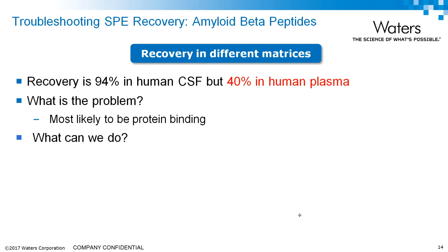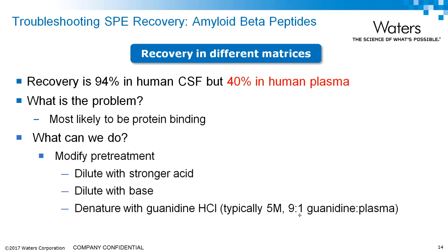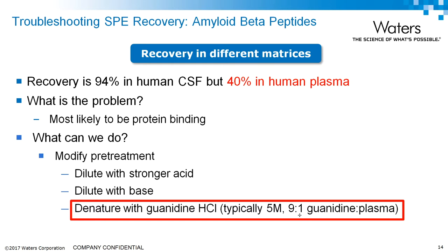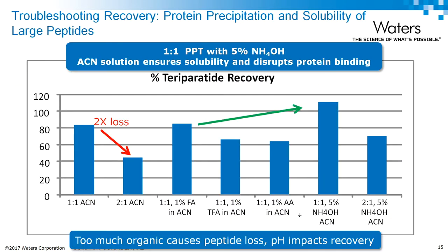For that same amyloid peptide, we saw high recovery in cerebrospinal fluid, which is a low protein content matrix, but very low recovery in plasma. The major difference is the protein content. What can we do? Modify the pretreatment. In this particular case, the only option that actually worked was a full denaturation — so sometimes you need to resort to extreme measures.